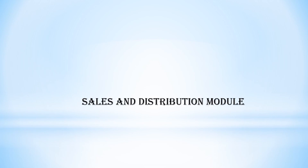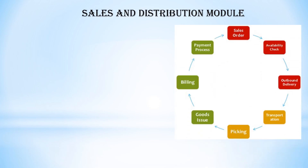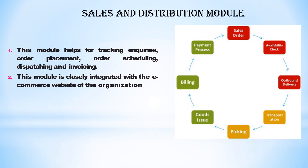Next is the sales and distribution module. Here you have all this — it is a cycle: sales order, availability check, delivery, transportation, picking, goods issue, and sales and distribution. In this model you will see scheduling, dispatch, and invoice generation — that is your receipt. This is also closely integrated with the e-commerce website.